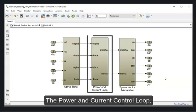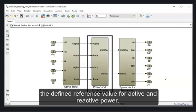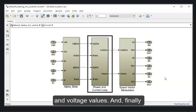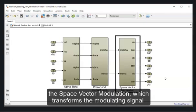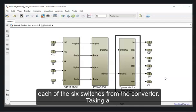The power and current control loop, in which a modulating signal is generated in respect to the defined reference value for active and reactive power, using the alpha and beta components of the measured current and voltage values. And finally, the space vector modulation, which transforms the modulating signal given in alpha and beta components to pulses for each of the six switches of the converter.